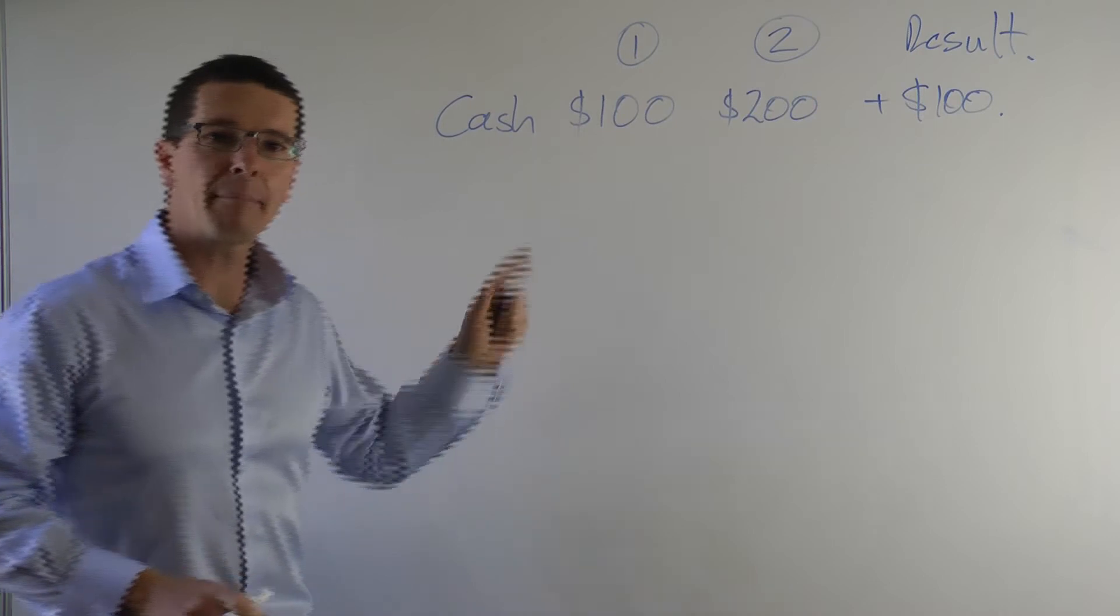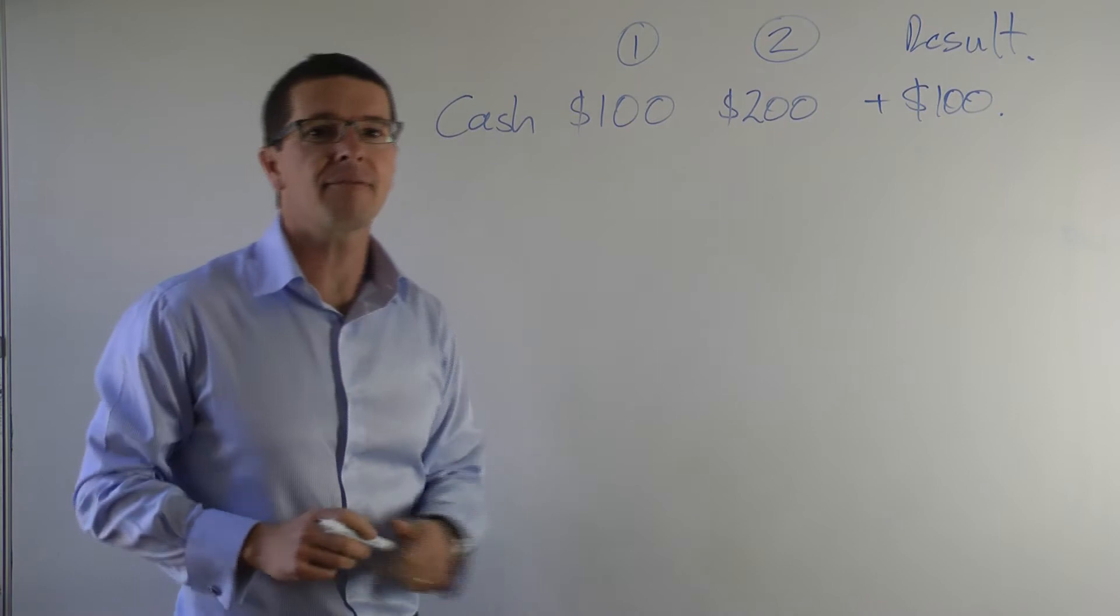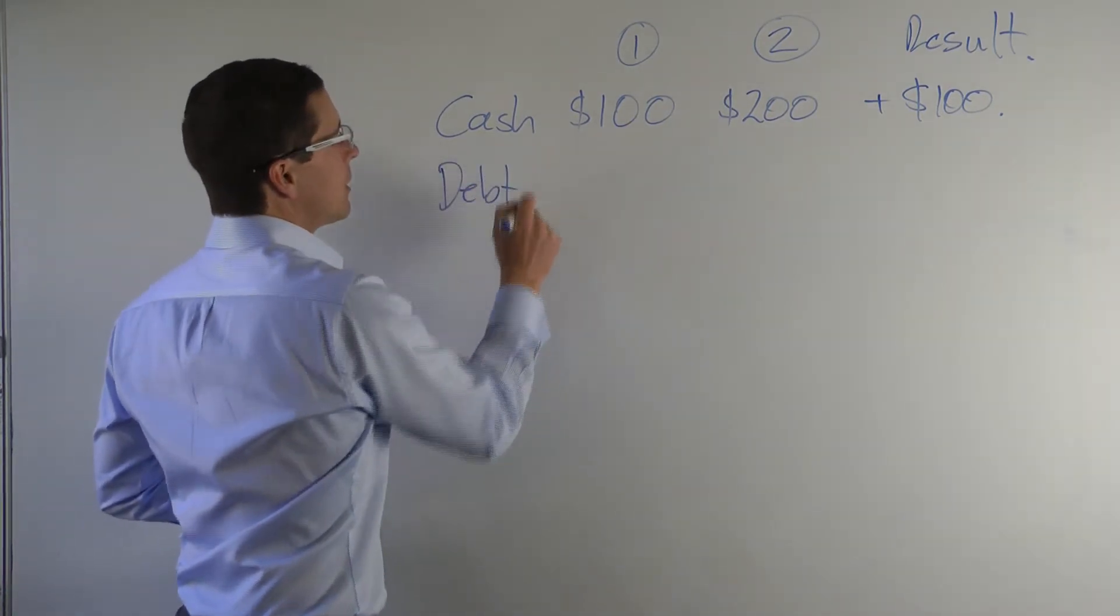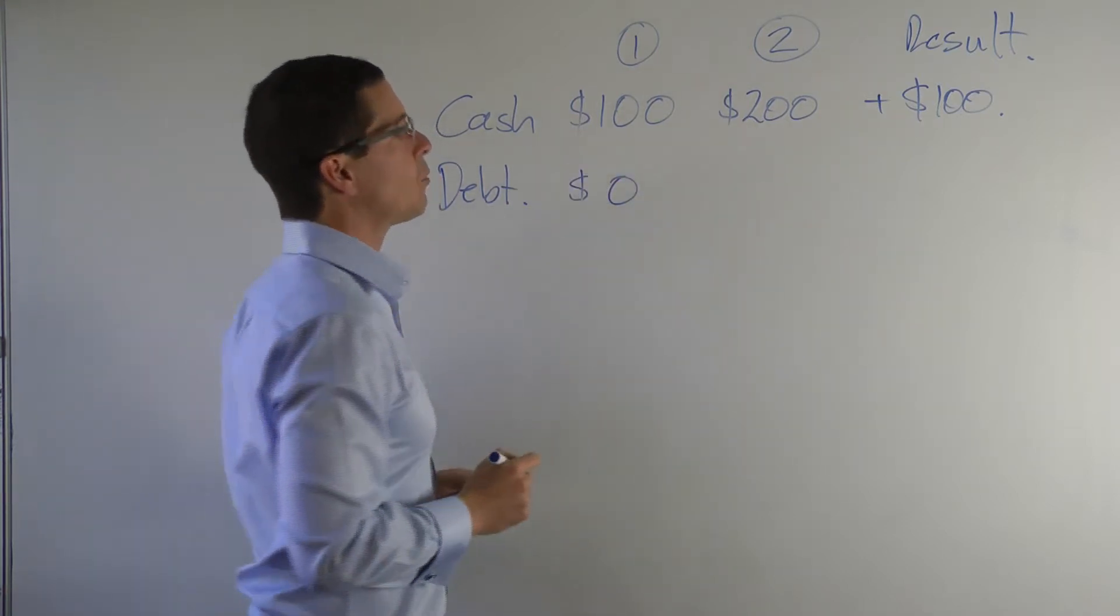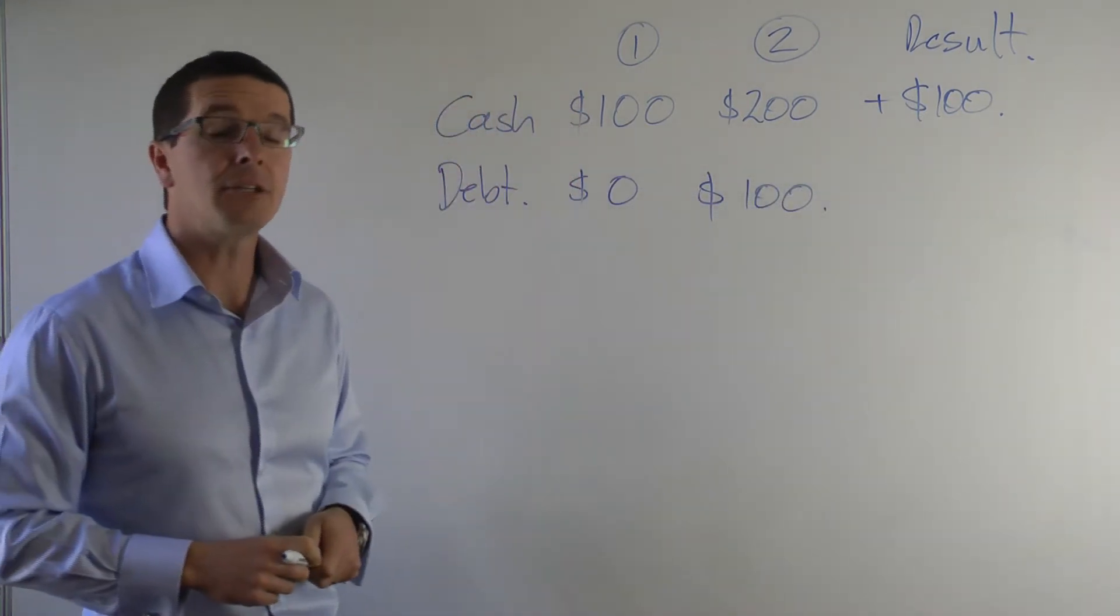Okay, the company made $100. What if, however, in addition to this information, I also told you that the company's borrowings had gone from zero in year one to $100 in year two. In other words, the company has borrowed $100.